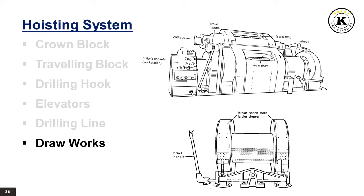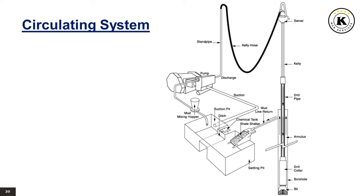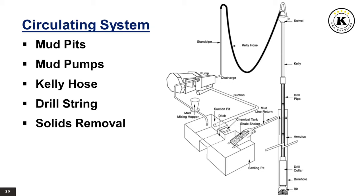Circulating System. The circulation system allows for circulation of the drilling fluid or mud down through the hollow drill string and up through the annular space between the drill string and wellbore. It is a continuous system of pumps, distribution lines, storage tanks, storage pits, and cleansing units. The mud pumps of the circulation system and the drawworks of the hoisting system are the two largest draws on the power system. The circulating system is composed of mud pits, mud pumps, kelly hose, drill string, solids removal equipment, and degassers.